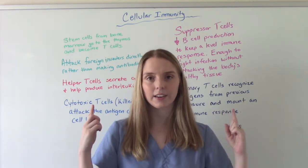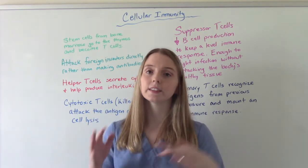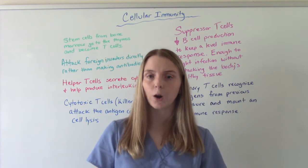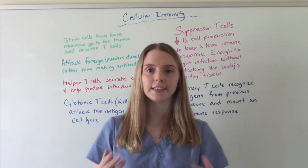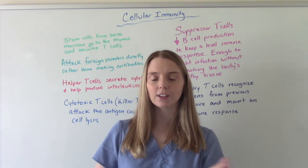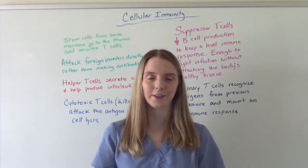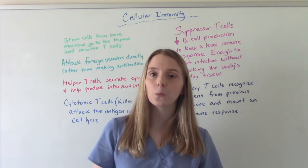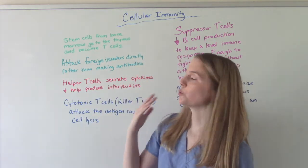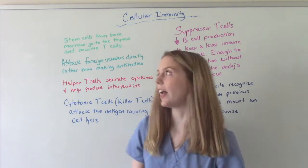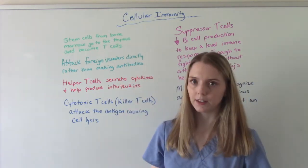Cellular immunity is all about the T-cells. What happens is the stem cells from the bone marrow travel to the thymus, and that is where they become the T-cells. You can remember T-cells and thymus both start with the letter T. The way they work is by attacking foreign invaders directly, rather than making antibodies — which we'll talk about when we discuss the B-cells.